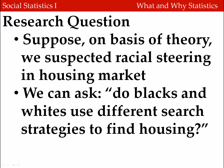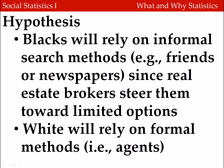As an example, suppose we have the following research question. Based on theory, we suspected that there was some kind of racial steering in the housing market. Our research question is: do blacks and whites use different search strategies to find housing? Our hypothesis may be that blacks are more likely to rely on informal search methods — for example, friends or newspapers — since discrimination in the housing market might lead them to work with real estate brokers who steer them towards a limited set of options. Whites, in contrast, may be more likely to rely on formal methods, like real estate agents or brokers, because discrimination doesn't tend to influence them as much.